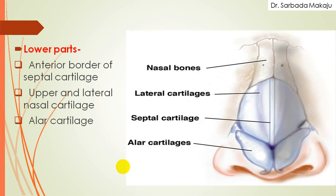Now the lower part consists of cartilage. Within this cartilage, there is the presence of the septal cartilage, and this is the anterior border of the septal cartilage. When you go laterally, there is the presence of the lateral cartilage. When you move downwards towards the ala, there is the presence of the alar cartilage.